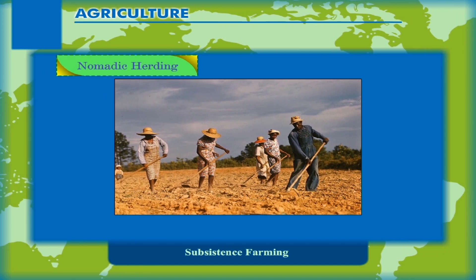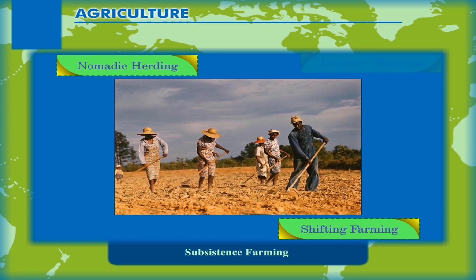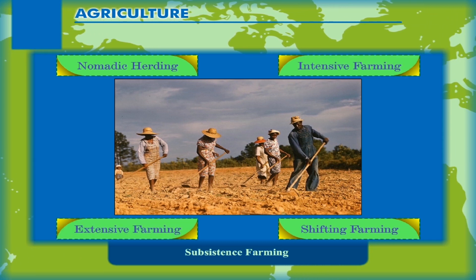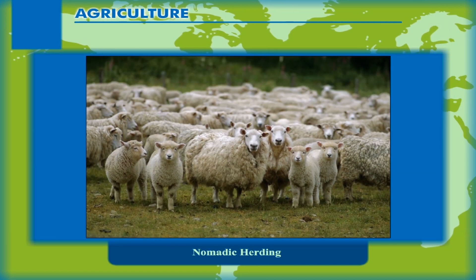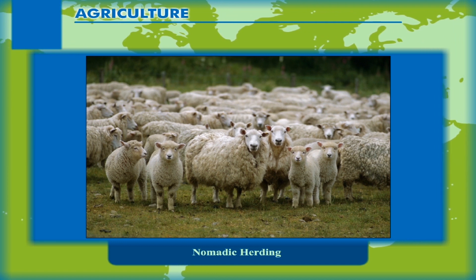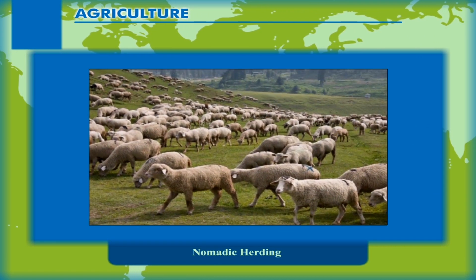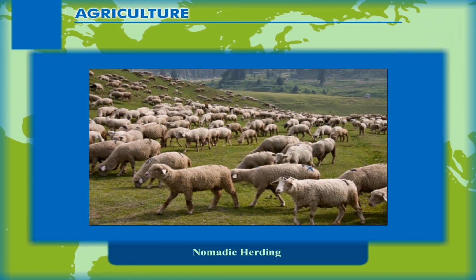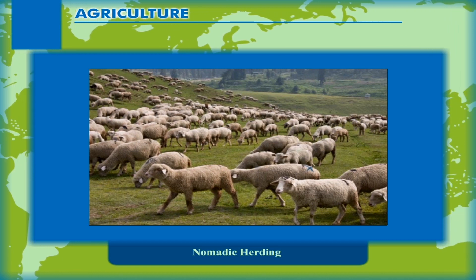Nomadic herding is practiced by those people who rear cattle, sheep, goats, camels, and yak. These animals are dependent on natural vegetation in the area. Herders move with their animals from one place to another in search of fodder.